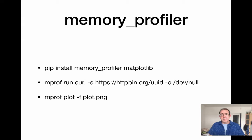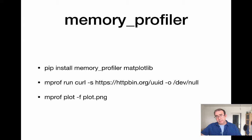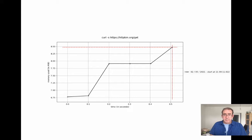Never satisfied with any one tool, we move on to memory_profiler — a Python library that attempts to plot the memory usage of the application. You can install it using pip, and run it with mprof run curl plus your command, which generates a database you can derive a plot from. Running a simple GET, we see we start at 6.75 megabytes and end up at 8.5 megabytes of memory used.